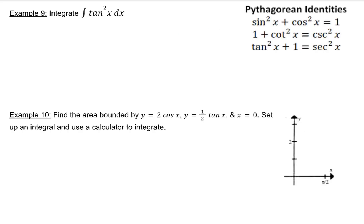Tangent squared x can be rewritten as secant squared x minus 1. The integral of secant squared x is tangent x. The integral of 1 is x.